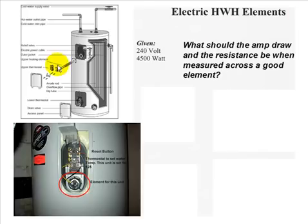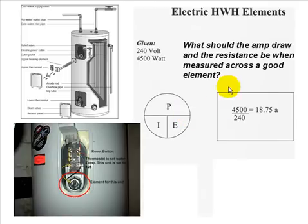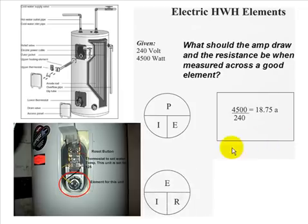What should the amp draw and the resistance be when measured across a good element? A good element. What should it show up as? Well, P over IE. We're going to solve for power. We know that it's 4,500 watts over 240 volts. So volts divided by watts is going to give me 18.75 amps. So if this heater is good and I hook up my amp probe to the element, you know, split the wires, hook up my amp probe to one of the elements, that's exactly what I should read. Or something very close to that. Your meter is going to do a little rounding, but that's about all.